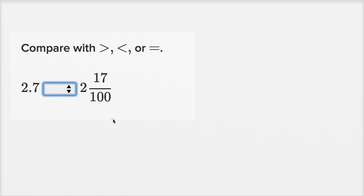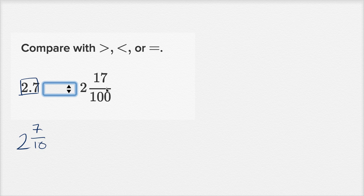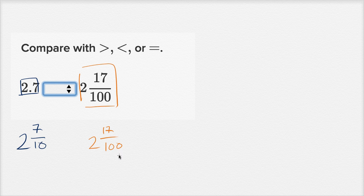There are a bunch of ways you could do this. You could convert both of them to mixed numbers. For example, 2.7 is the same thing as 2 and 7 tenths. You could compare 2 and 7 tenths to 2 and 17 hundredths. They both have a 2, so you want to compare the fraction part. So what's larger, 7 tenths or 17 hundredths?